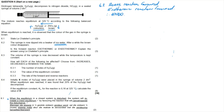Question 6.3: the volume of the syringe is decreased while temperature is kept constant. We are asked how each of the following is affected — choose increases, decreases, or remains the same. Importantly, since temperature is kept constant, the Kc value will remain the same, because Kc is constant at a specific temperature.